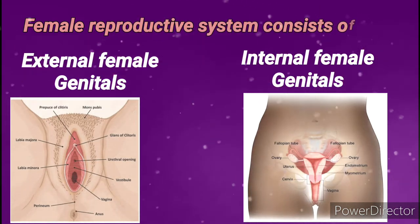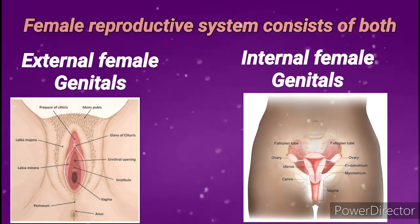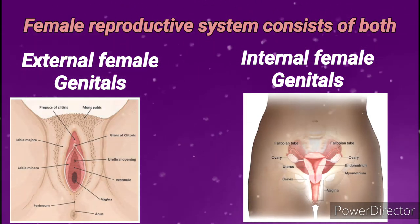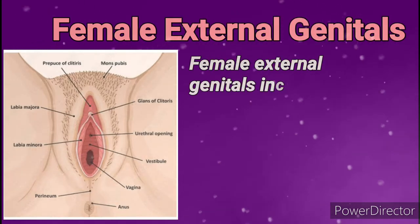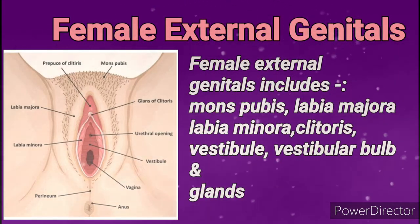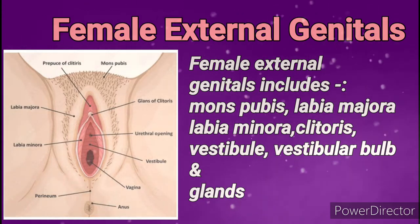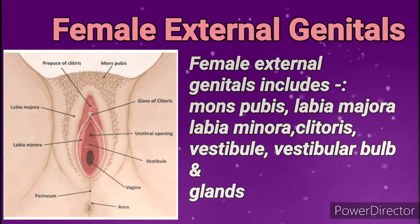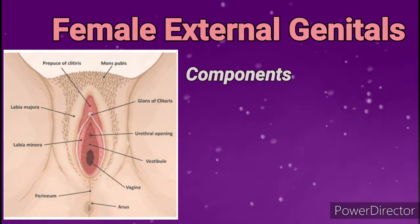The female reproductive system consists of both external and internal female genitals. In this video I'm going to explain about external female genitals in short; internal female genitals will be discussed in the next video. External female genitals include mons pubis, labia majora, labia minora, clitoris, vestibule, vestibular bulb, vestibular glands, and hymen.